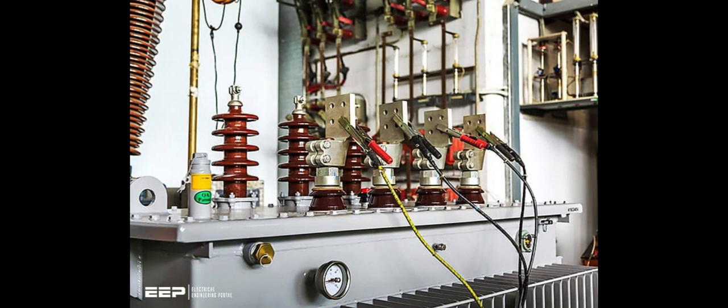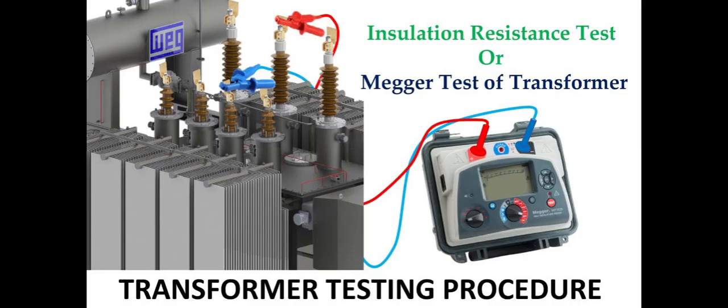4. Dielectric Breakdown Test (Hipot Test). Purpose: to test the insulation's ability to withstand high voltage without breaking down. Procedure: apply a high voltage, greater than the normal operating voltage, to the transformer for a specified time and observe if the insulation withstands the voltage.